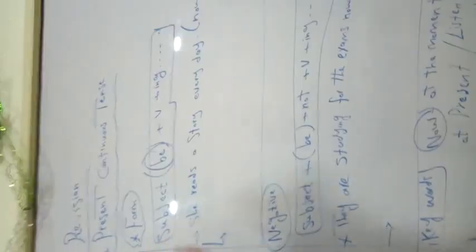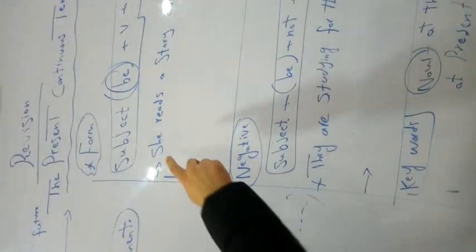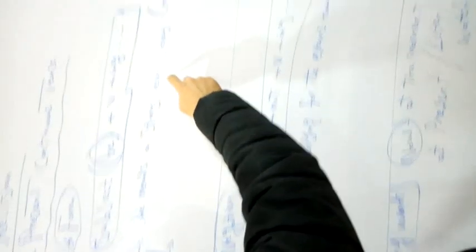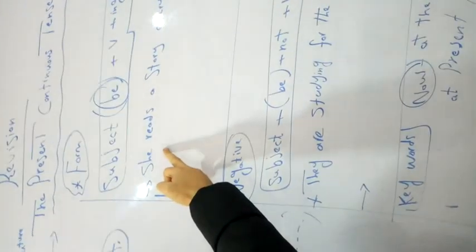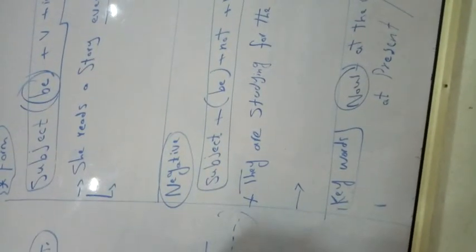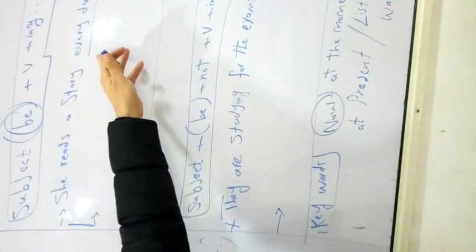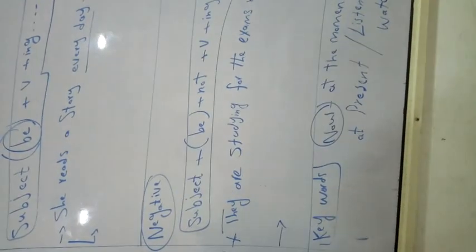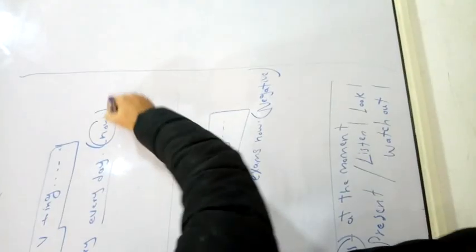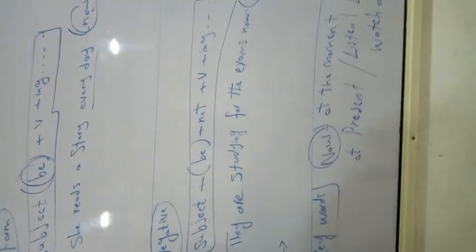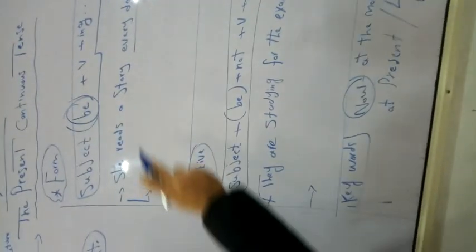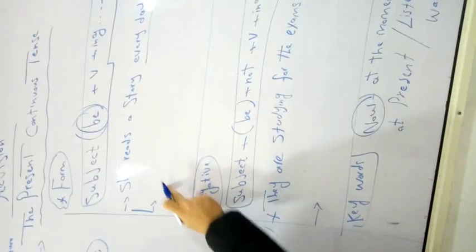This is the form as we said. When I say take this example: She reads a story every day. Do you think this is present continuous or present simple? We have every day. We have studied in the last session that every day refers to present simple. But I ask you now to change from the present simple to the present continuous tense. Who can change this to the continuous one?